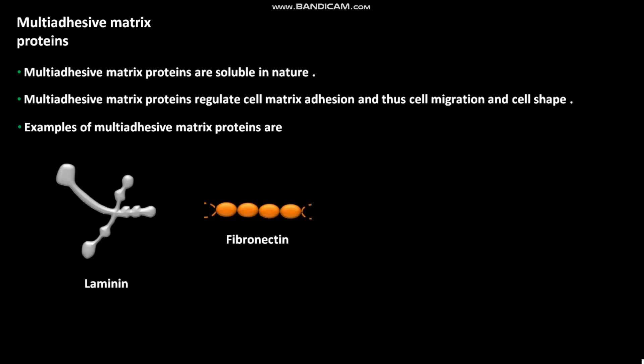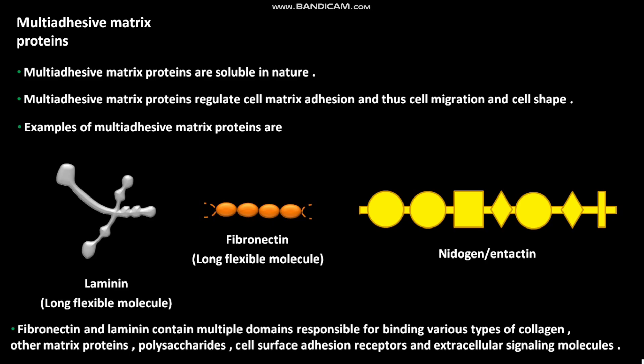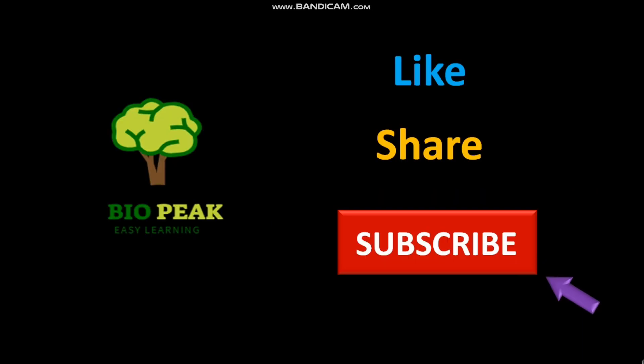fibronectin, and nidogen or entactin. Fibronectin and laminin contain multiple domains responsible for binding various types of collagen, other matrix proteins, polysaccharides, cell surface adhesion receptors, and extracellular signaling molecules.